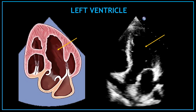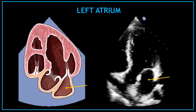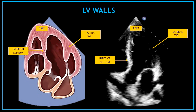The first big chamber at the top of the screen on your right hand side is the left ventricle. At the left of the left ventricle, that top chamber we can visualize there, it's the right ventricle. Under the left ventricle, that rounded chamber, it's the left atrium. The left ventricle walls visualized in the apical 5 chamber view are the inferior septum in the middle and the lateral wall on the right hand side. At the top, we can also visualize the left ventricle apex.